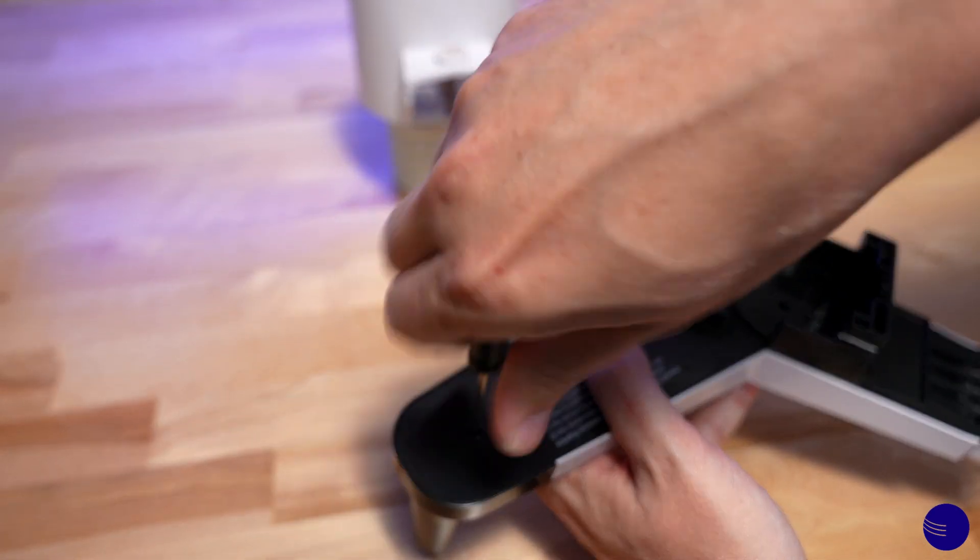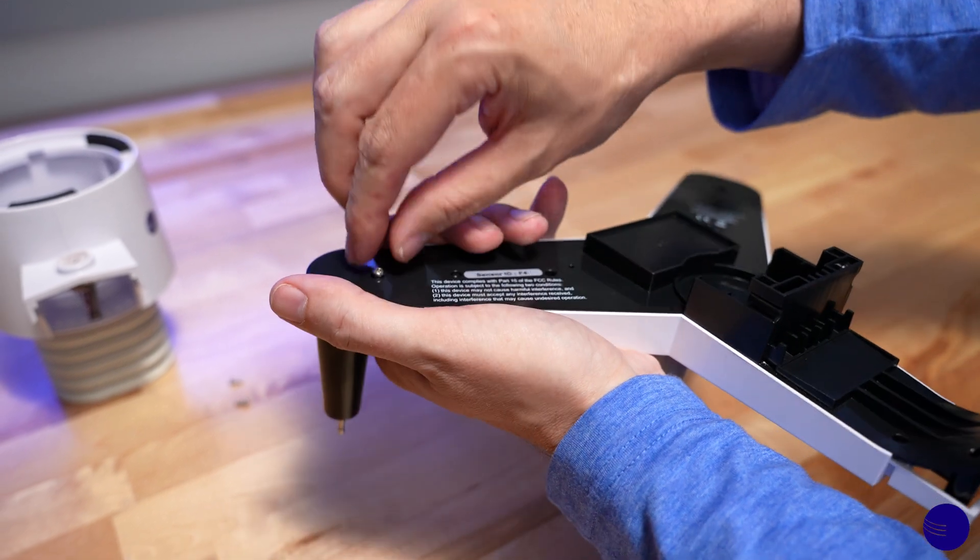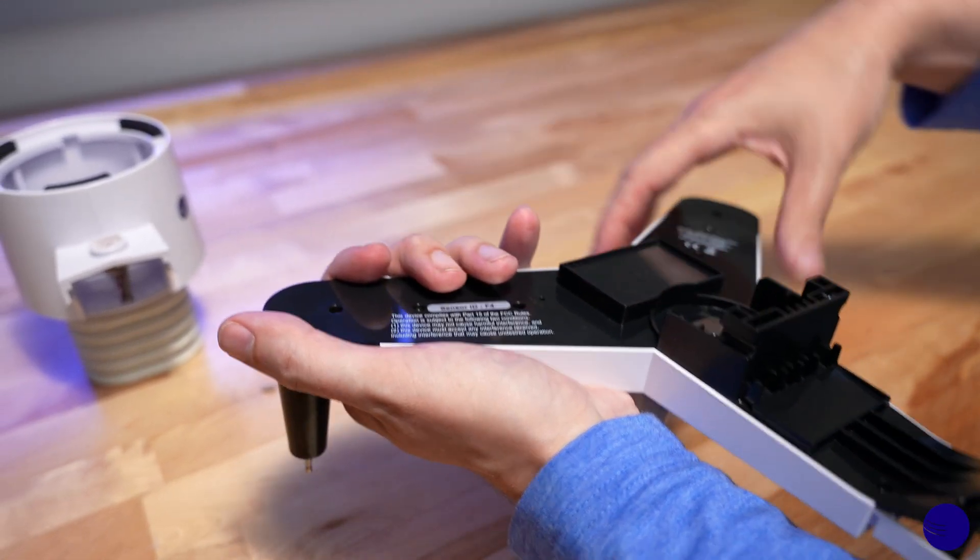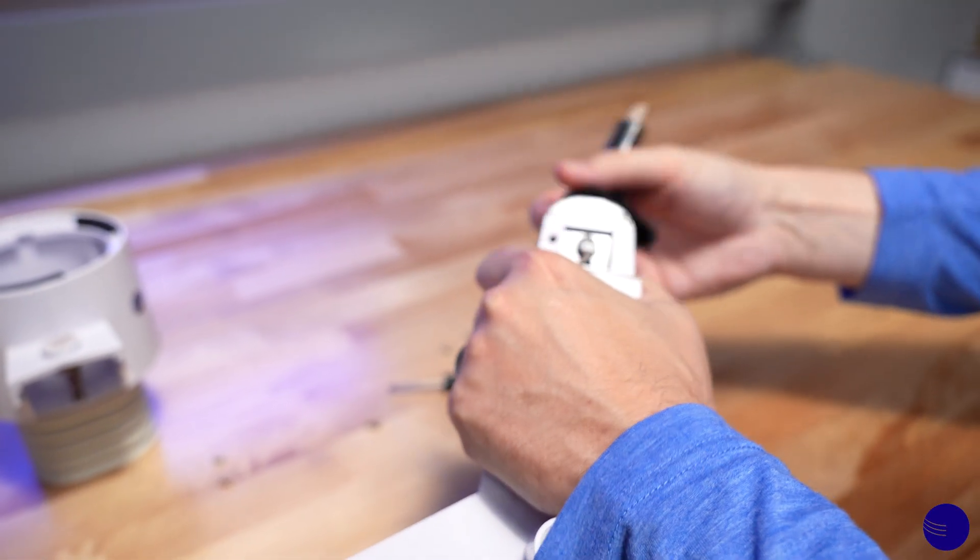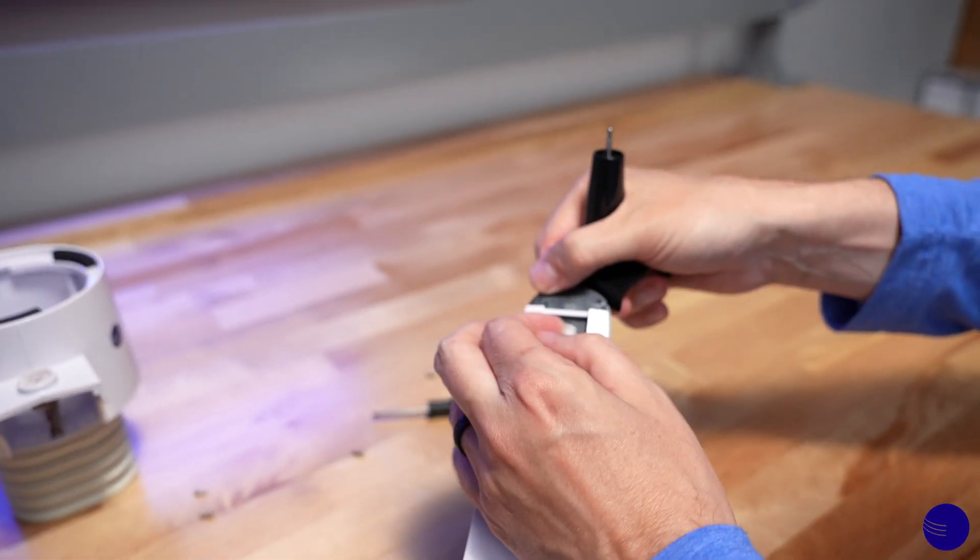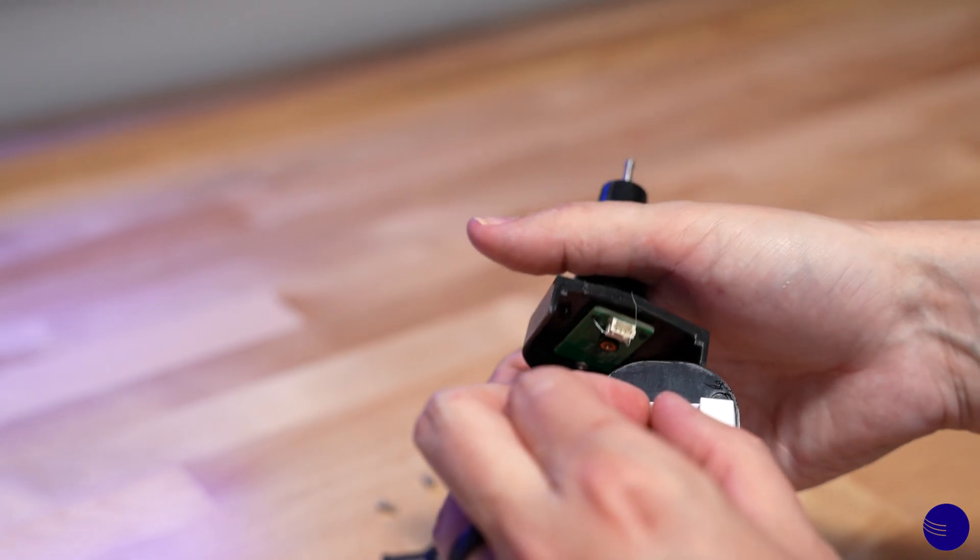Now that we've removed the screw, we'll detach our assembly from the array by pulling outwards. As you can see, the cord came unplugged from the port there. There is presence of dielectric grease as well.